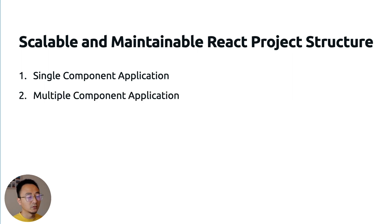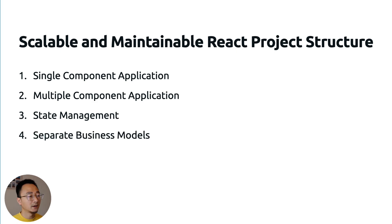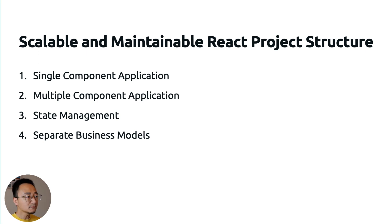Then we have the multiple component application stage, where you find a single component is no longer suitable — it's difficult to maintain a huge component — so you split it into multiple smaller components. As your application grows, state management will become a challenge, so you focus more on it by introducing hooks or some state management library. Later, you will see the benefit of having a separate data model that handles all the data validation, data conversion, and maintaining all the data in a central place — normally in a class.